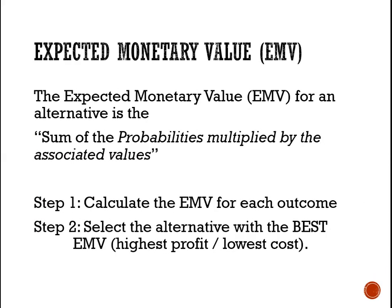The steps we take for this process are: Step 1, calculate the EMV for each outcome. The EMV, which is expected monetary value, is the sum of the probabilities multiplied by the associated values. So we multiply each probability by the value related to it, and then add the results. Step 2, we simply select the alternative with the best EMV for implementation — either the highest expected profit or the lowest expected cost.